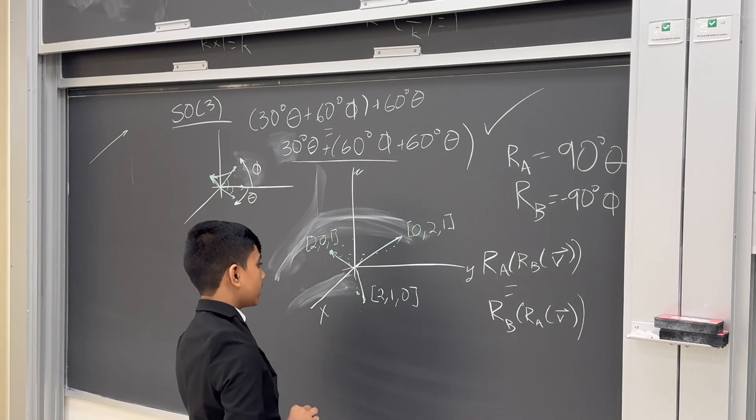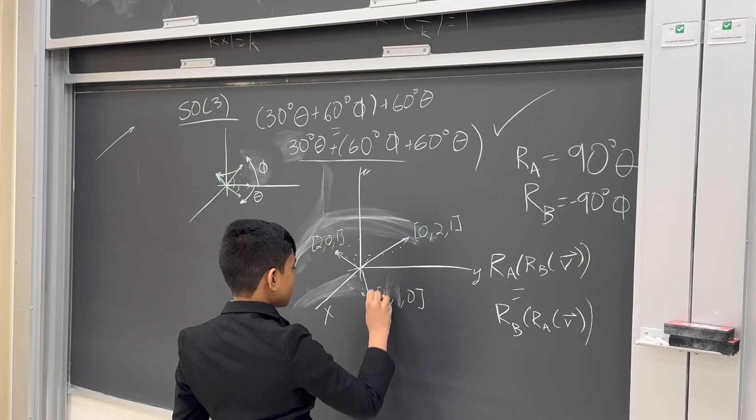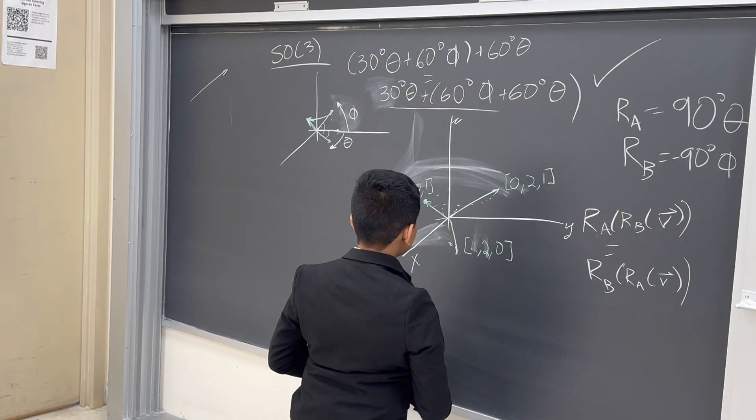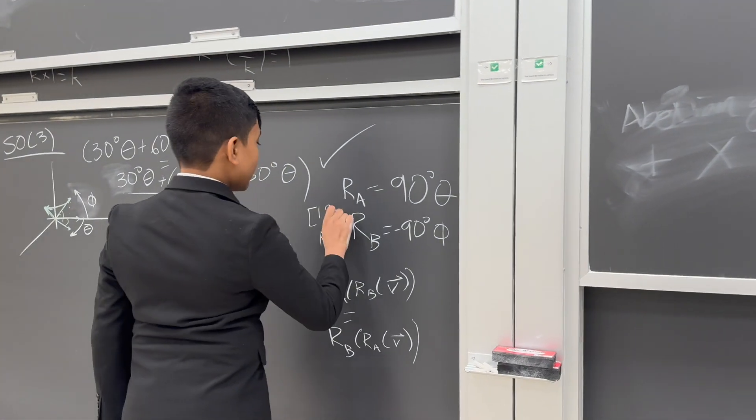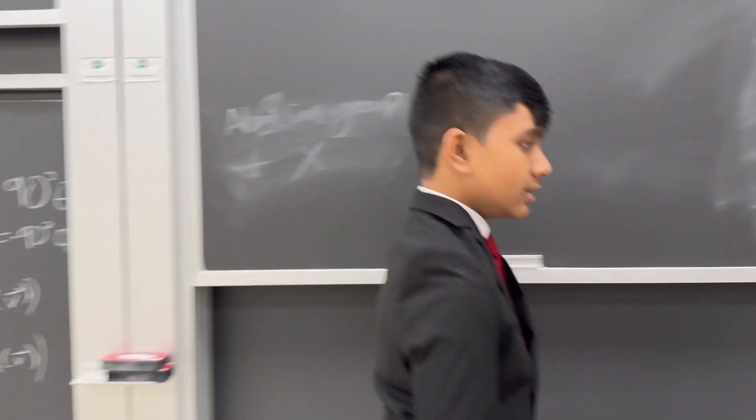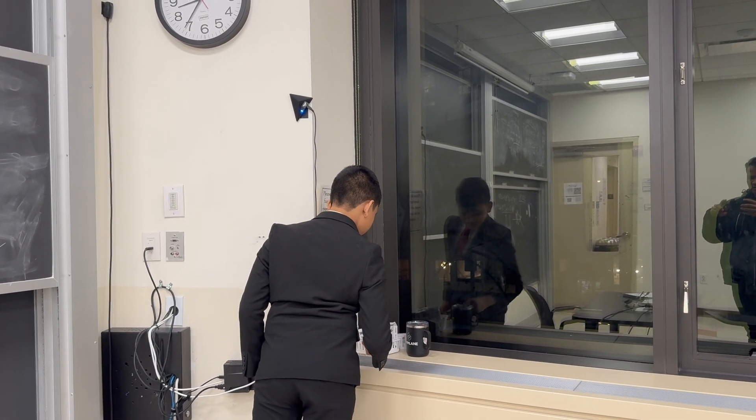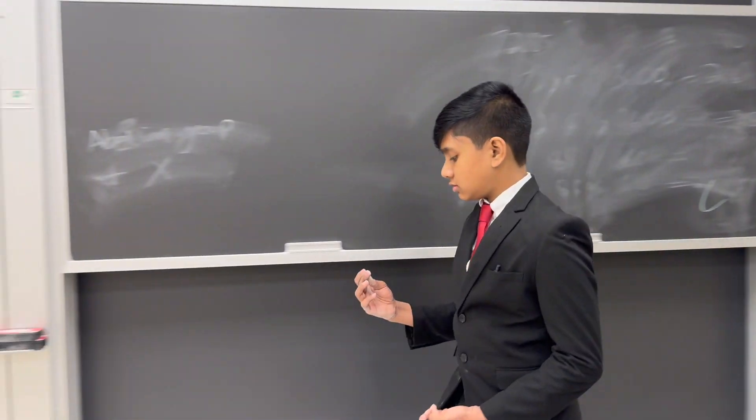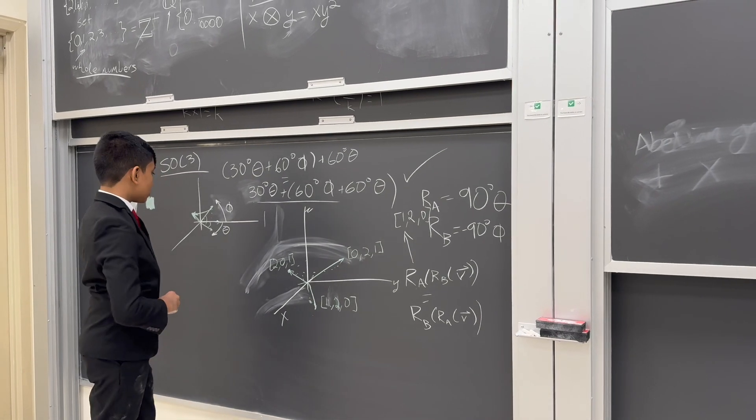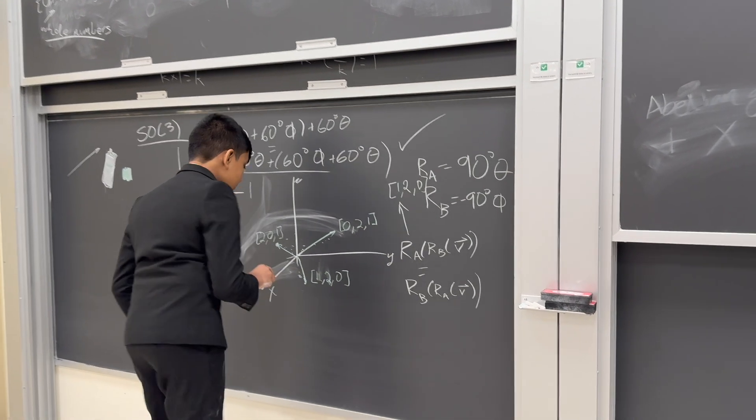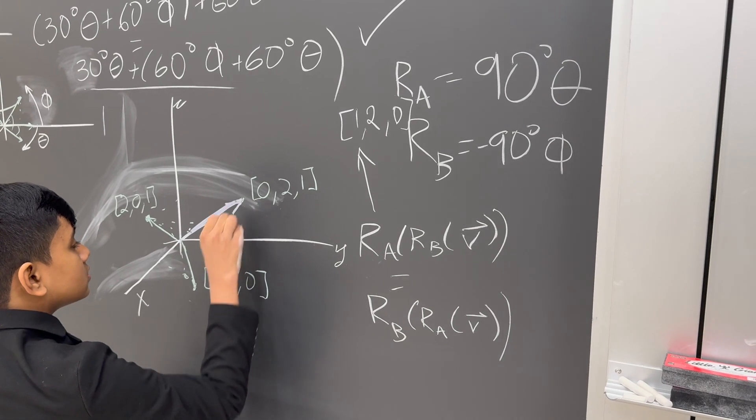And, alright. So, we are not done yet. Now, let's grab the other colored chalk to see what happens if we reverse that direction. So, now, we also have (0, 2, 1).